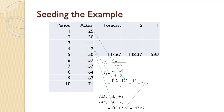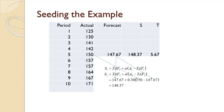In period 5, we first seed t sub 5 as a sub 4 of 142 minus a sub 1 of 125, all divided by 5 minus 2. That works out to 5.67. Next, we seed taf sub 5 as a4 of 142 plus the t5 value we just computed of 5.67, resulting in 147.67. We can now calculate s sub 5 as taf sub 5 plus alpha times the quantity a sub 5 minus taf sub 5. With taf sub 5 equal to 147.67 and a sub 5 equal to 150, that results in s sub 5 of 148.37. That concludes the seeding and we are now ready to begin the regular calculations.